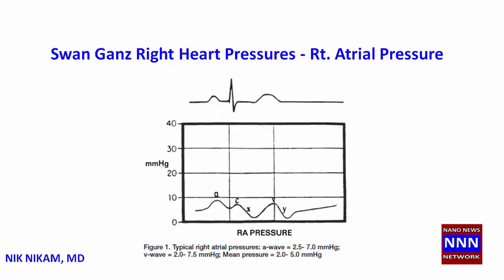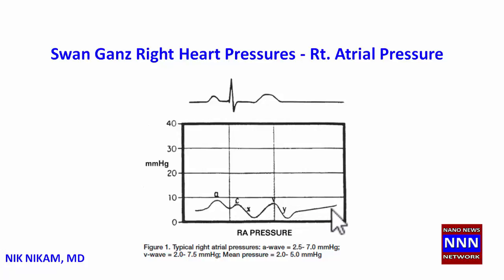The C wave is followed by a gradual descend known as the X descent, which represents the continued relaxation of the right atrium. The X descent also happens during right ventricular systole. This is followed by a gradual filling of the right atrium by blood returning from the upper and lower parts of the body, which represents the V wave. The V wave reaches its peak just before the tricuspid valve opens. With the opening of the tricuspid valve, there is movement of blood into the right ventricle, which gradually empties the right atrium, leading to the Y descent.